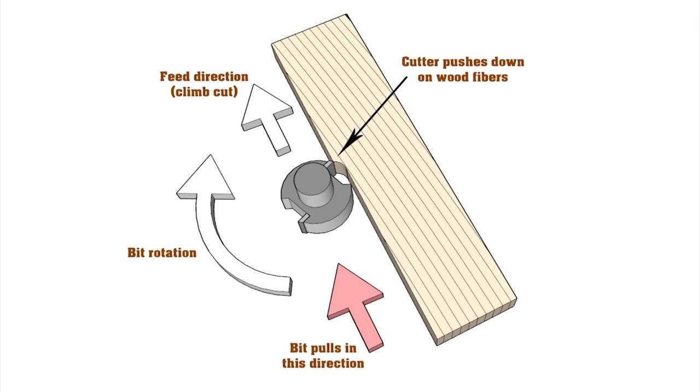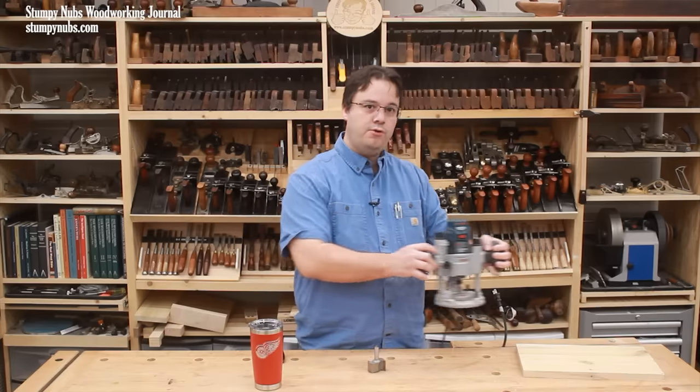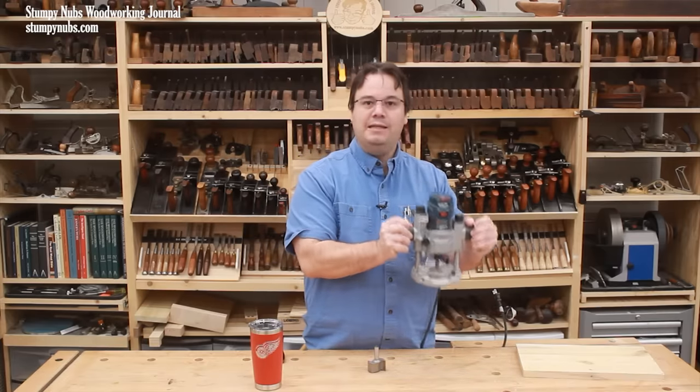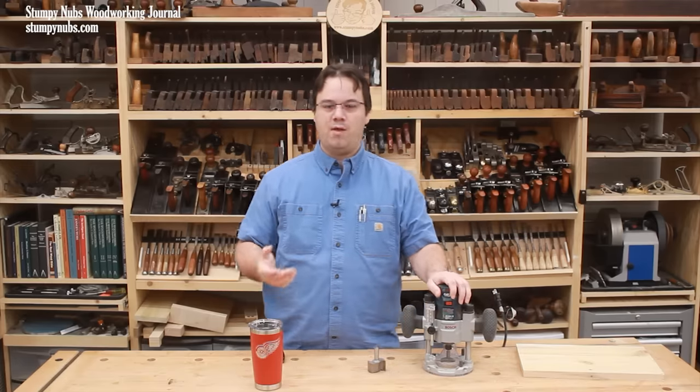In this situation, with the grain running against you, a climb cut will produce better results. As I explained, climb cutting feed directions may allow the bit to gain some traction and pull the router motor in the direction that you're feeding it. So it requires a firm grip and a light cut, perhaps forming your profile in two or three passes rather than just one.